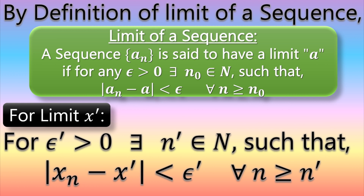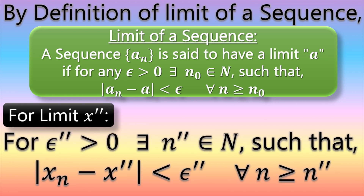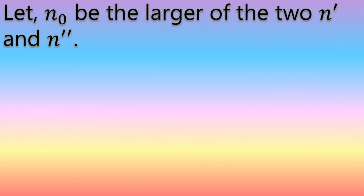We need two separate notations for both limits. For the second limit x'': for epsilon'' greater than zero, there exists N'' belonging to the set of natural numbers such that |xₙ − x''| < epsilon'' for all n greater than or equal to N''.